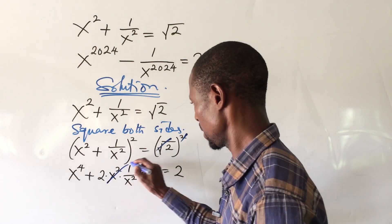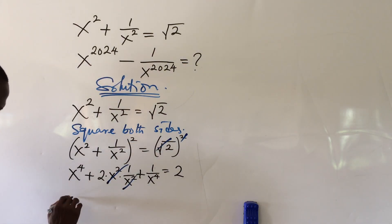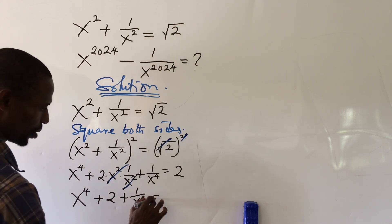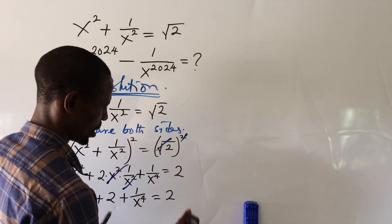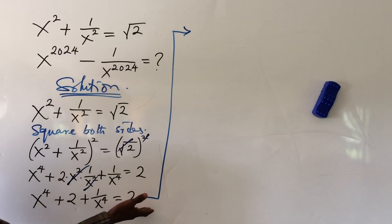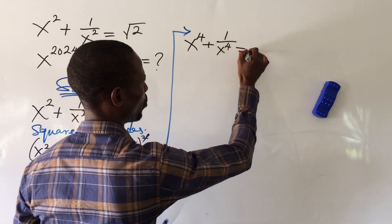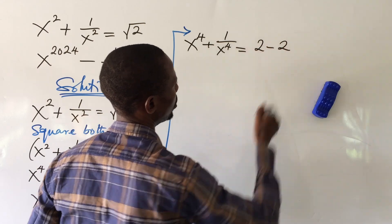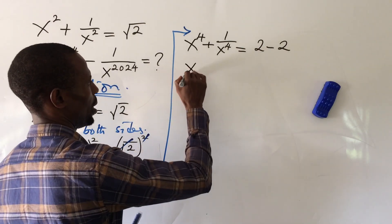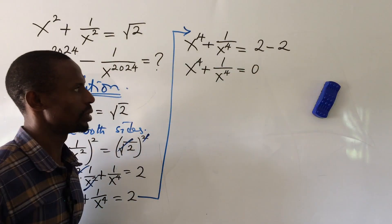The middle term simplifies: 2 times 1 gives us 2, which cancels with the 2 on the right-hand side. So we are left with s to the power of 4 plus 1 all over s to the power of 4 equal to 0.